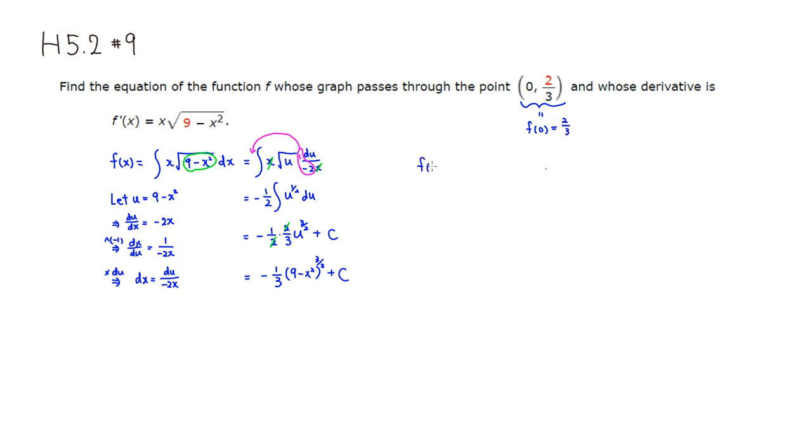So f of 0, according to the formula, so you have a negative 1 third. So that was there. So if you put 0 there, you have a 9. So 9, then you have a 1 half power. Square root of 9 is 3. And you have 3 cubed. So it's going to be multiplied by 3 cubed. Or 27. Plus some constant c.